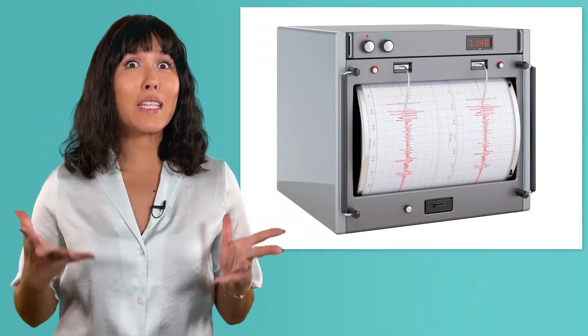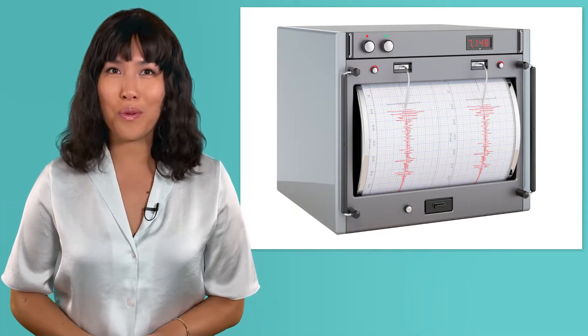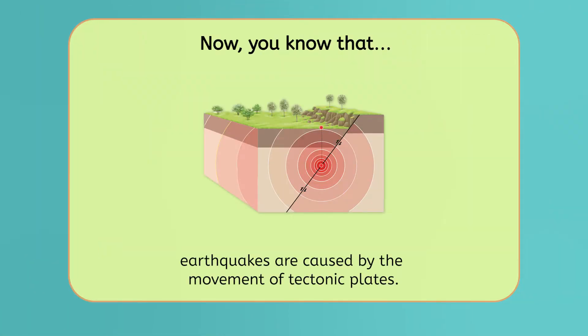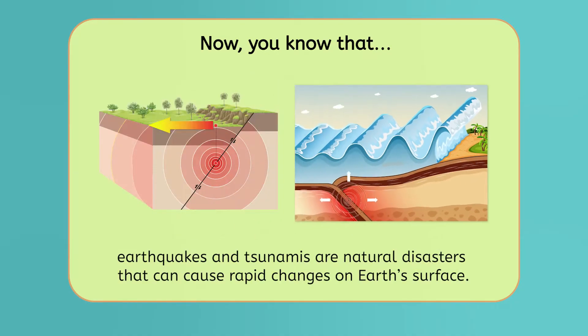Still, I'm glad this was just a small one. So, let's recap what we've learned today. Now you know that earthquakes are caused by the movement of tectonic plates, that undersea earthquakes can cause tsunamis, and that both of these natural disasters can cause rapid changes on Earth's surface.